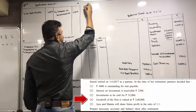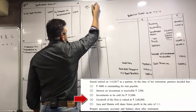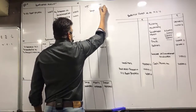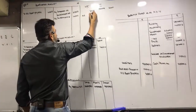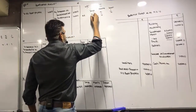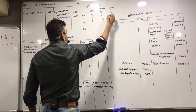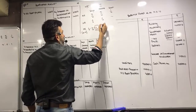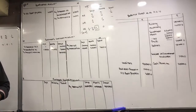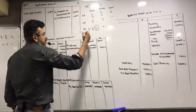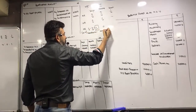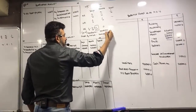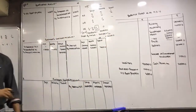Goodwill of the firm valued at 2 lakh. Let's find the gain ratio. Old ratio: 4:5:1. New ratio: Jaya 1/2, Mamata 1/2. Gain ratio: new minus old. Jaya: 1/2 minus 4/10 = 1/10. Mamata: 1/2 minus 5/10 = 0. Smriti: 0 minus 1/10. Goodwill — Smriti's share: 2 lakh into 1/10 = 20,000.